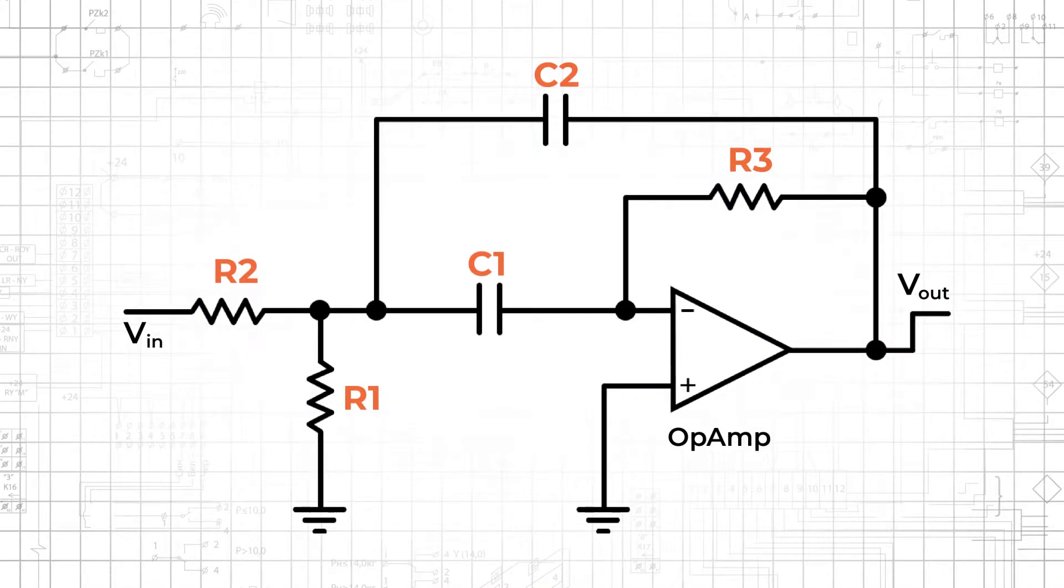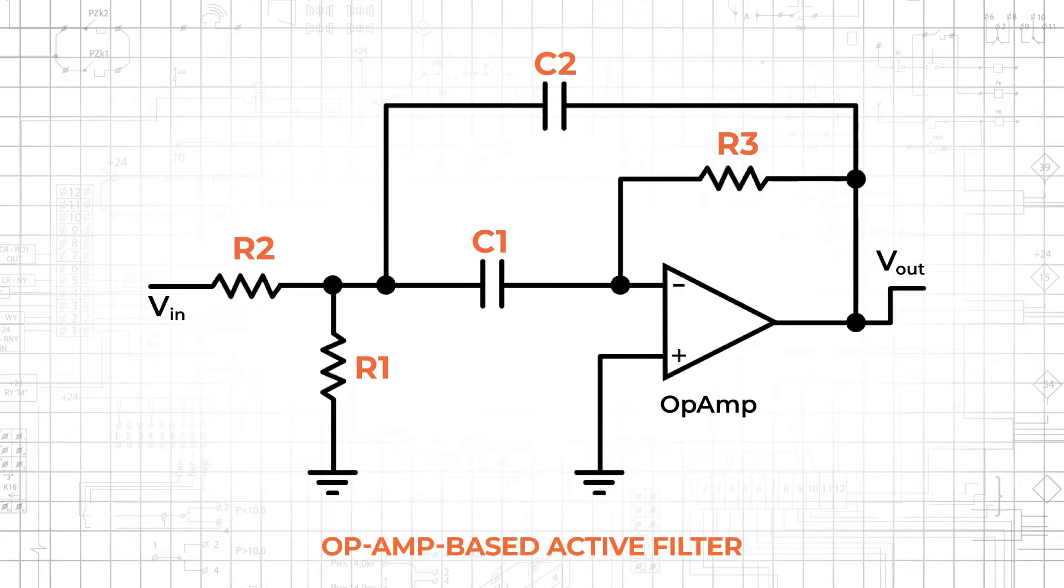By using an op-amp, we can create a second order filter without using inductors. Here we have an op-amp based active filter using a multi-feedback or MFB topology. This is a two-pole or second order filter that creates a bandpass response.